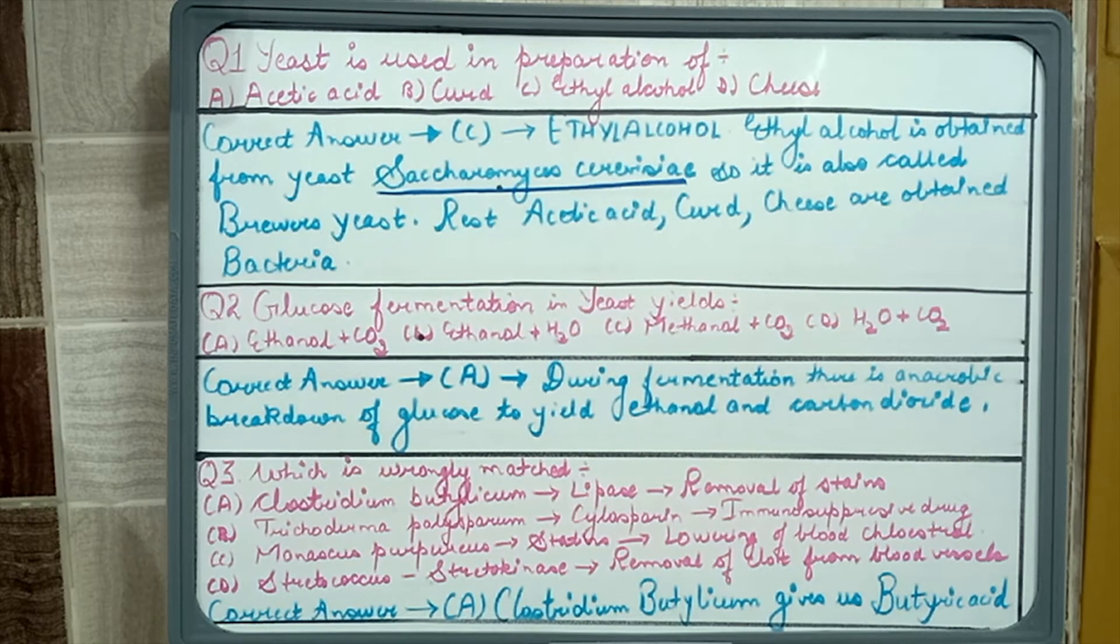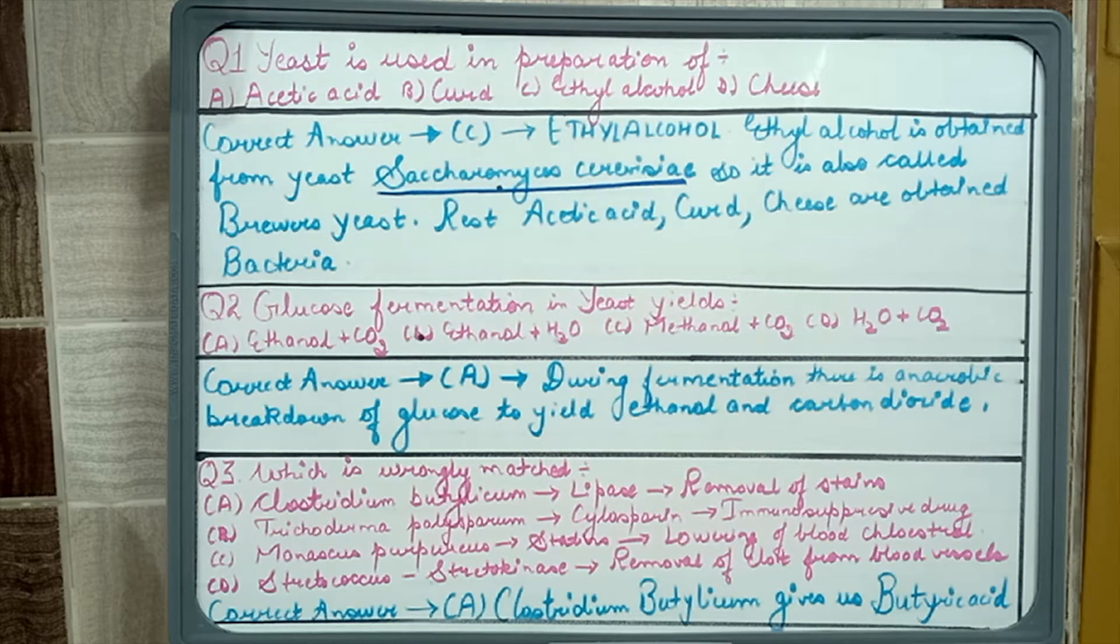The first question is: yeast is used in preparation of acetic acid, curd, ethyl alcohol, or cheese. The correct option is option C, ethyl alcohol.